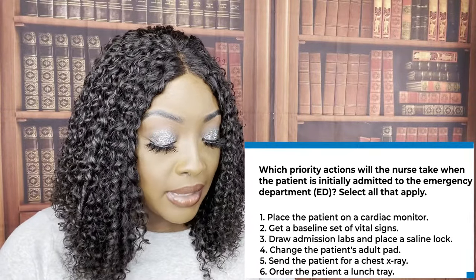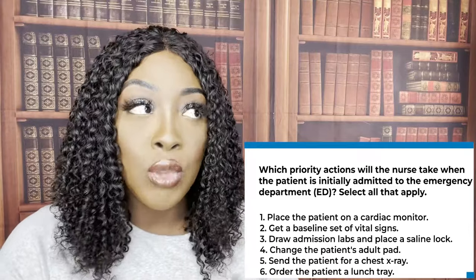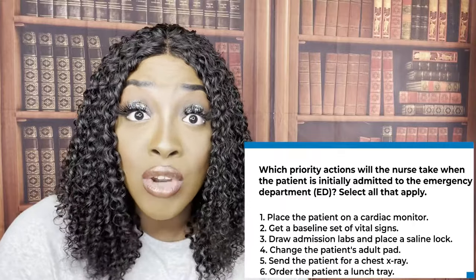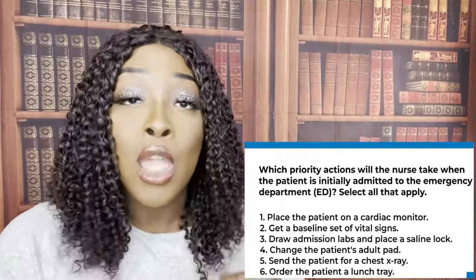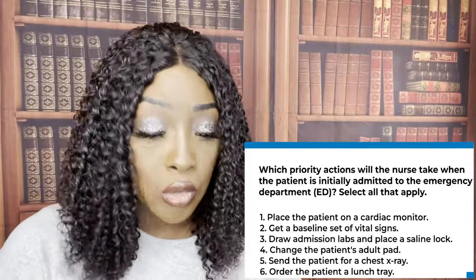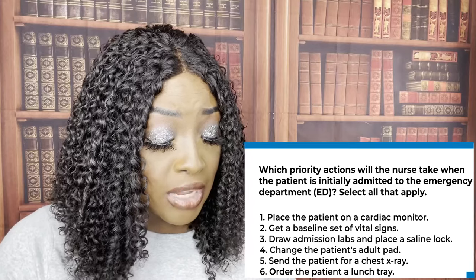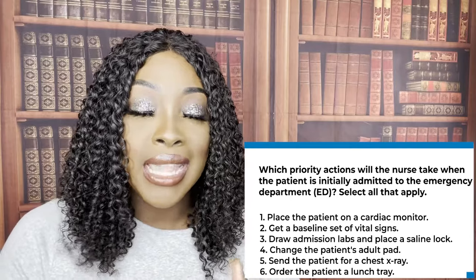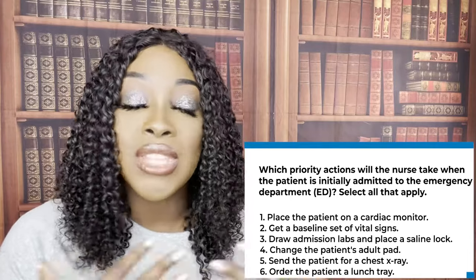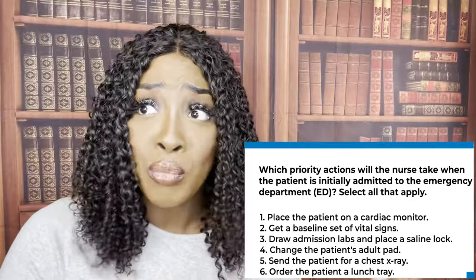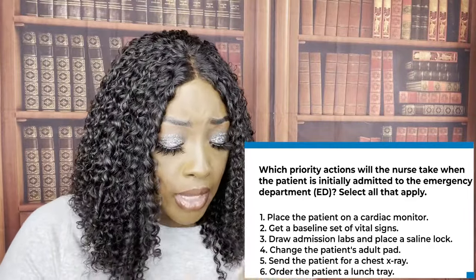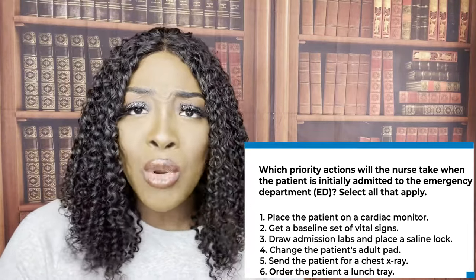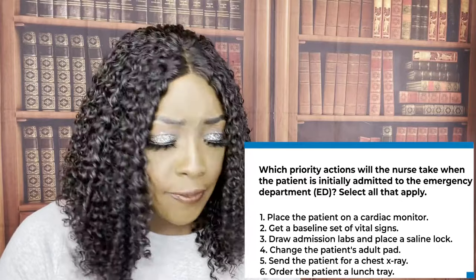Number two: get a baseline set of vital signs — True. Every time you have a new admission, one of the first things you're going to do is get a baseline because we want to see how the patient's trending. We want to see how they came in and what's happening — are they getting better or worse? Number three: draw admission labs and place a saline lock — True. We want to get the labs as a baseline and have that lock in place in case we need to give IV fluids or medications.